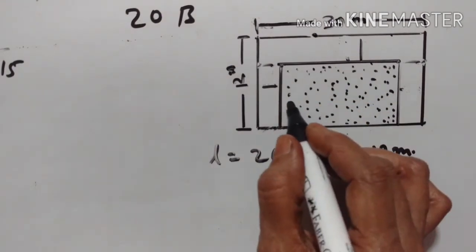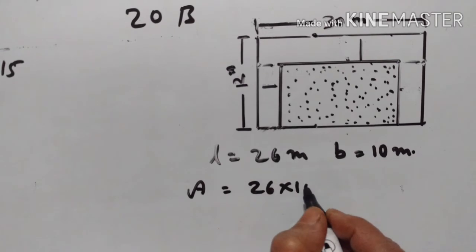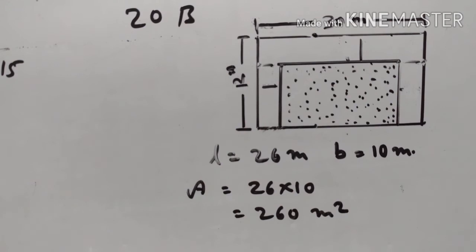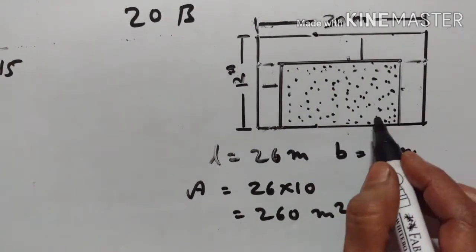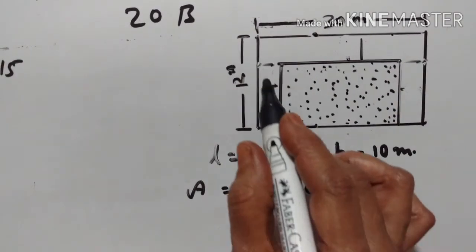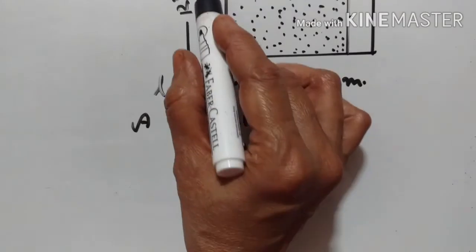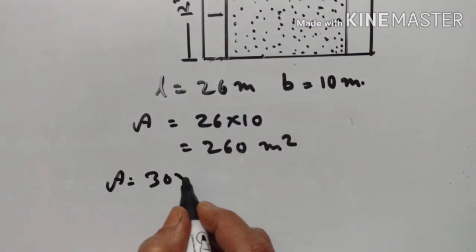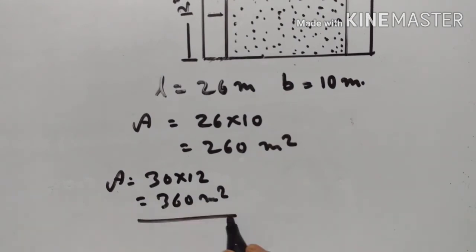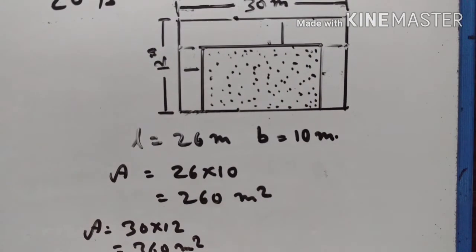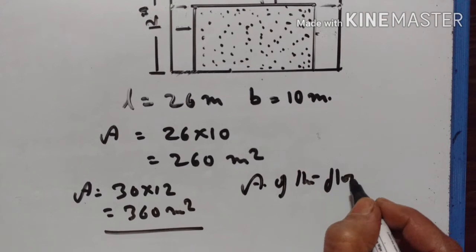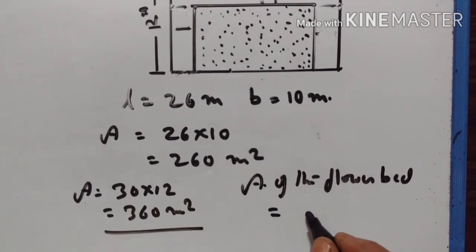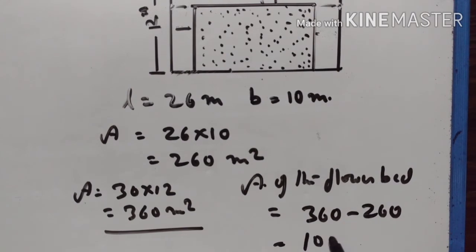So the area of this lawn is equal to 26 into 10, which is 260 square meters. Now we have to find the area of the flower beds. Area of flower beds equals area of the outer rectangle minus area of the lawn. Area of the outer rectangle is 30 into 12, which is 360 square meters. So 360 minus 260 equals 100 square meters. The area of the flower bed is 100 square meters.